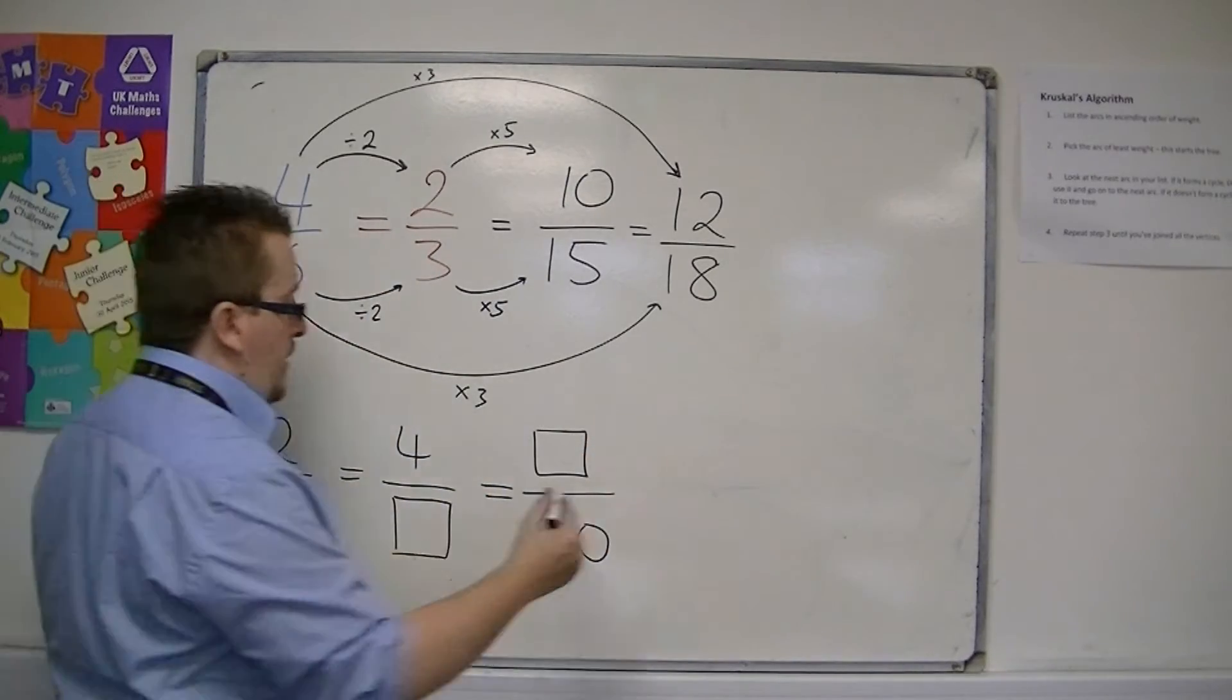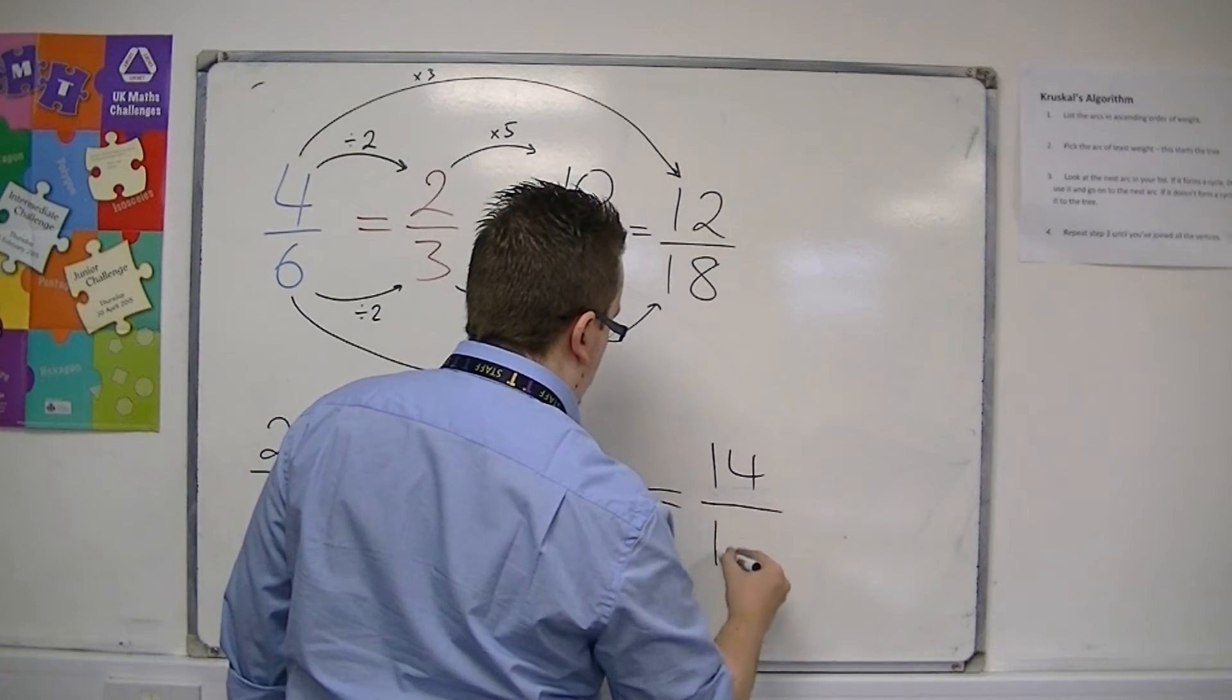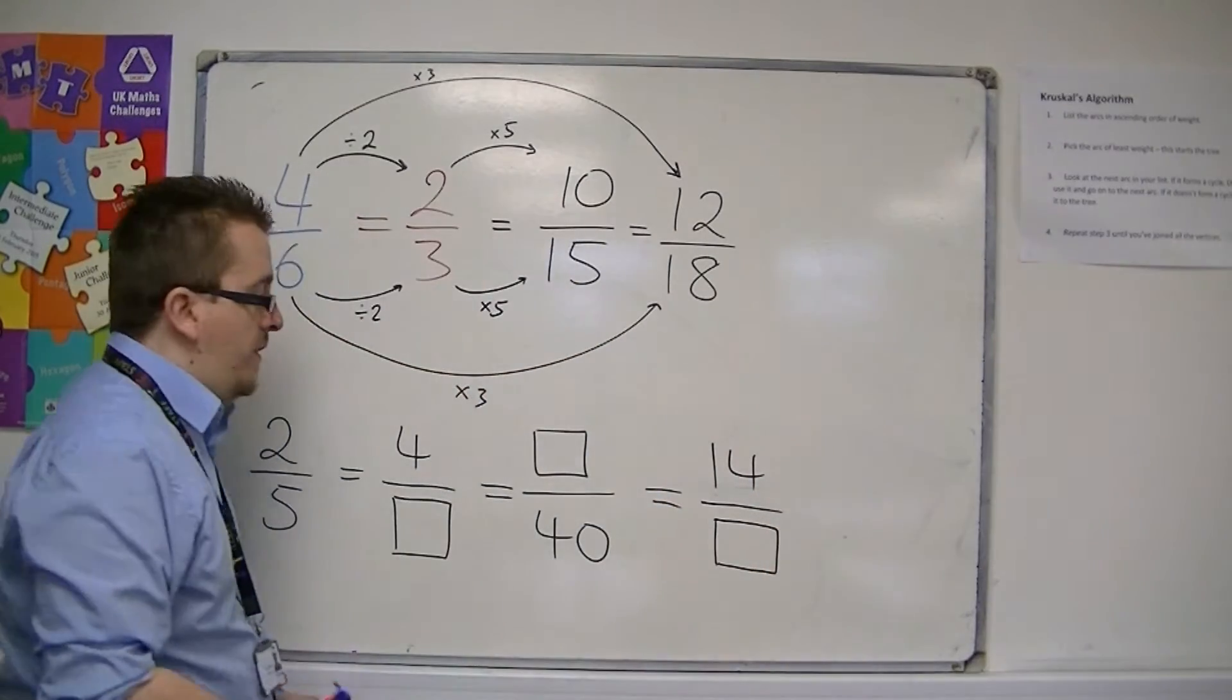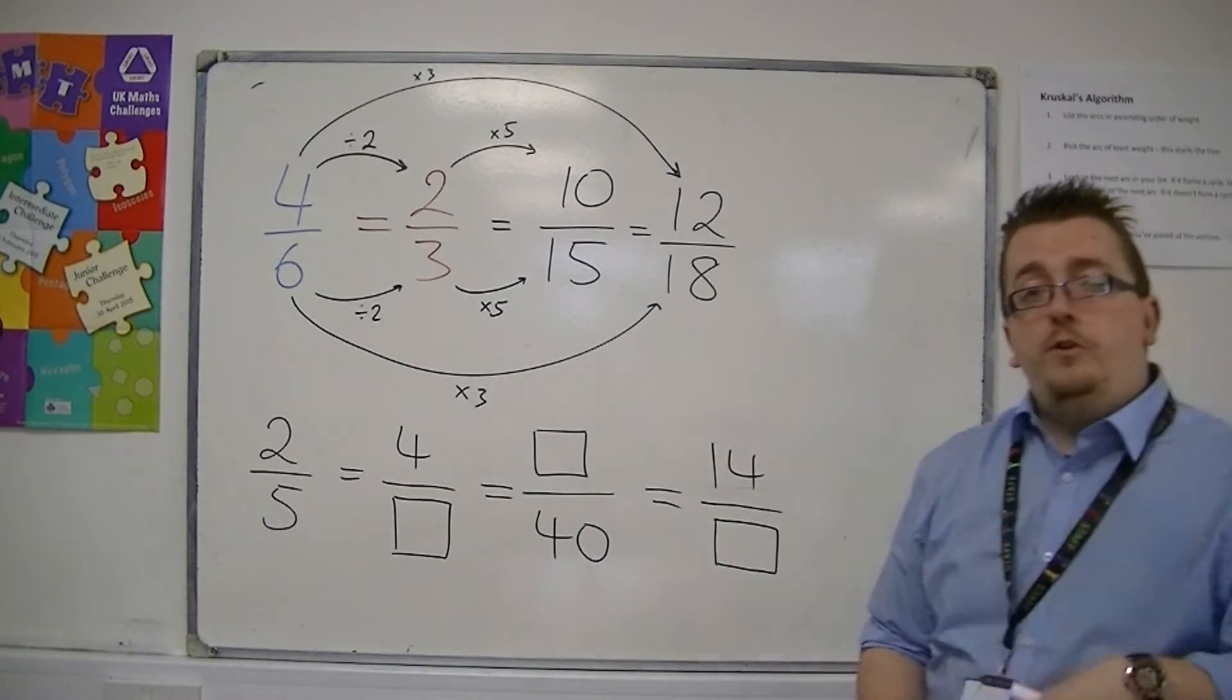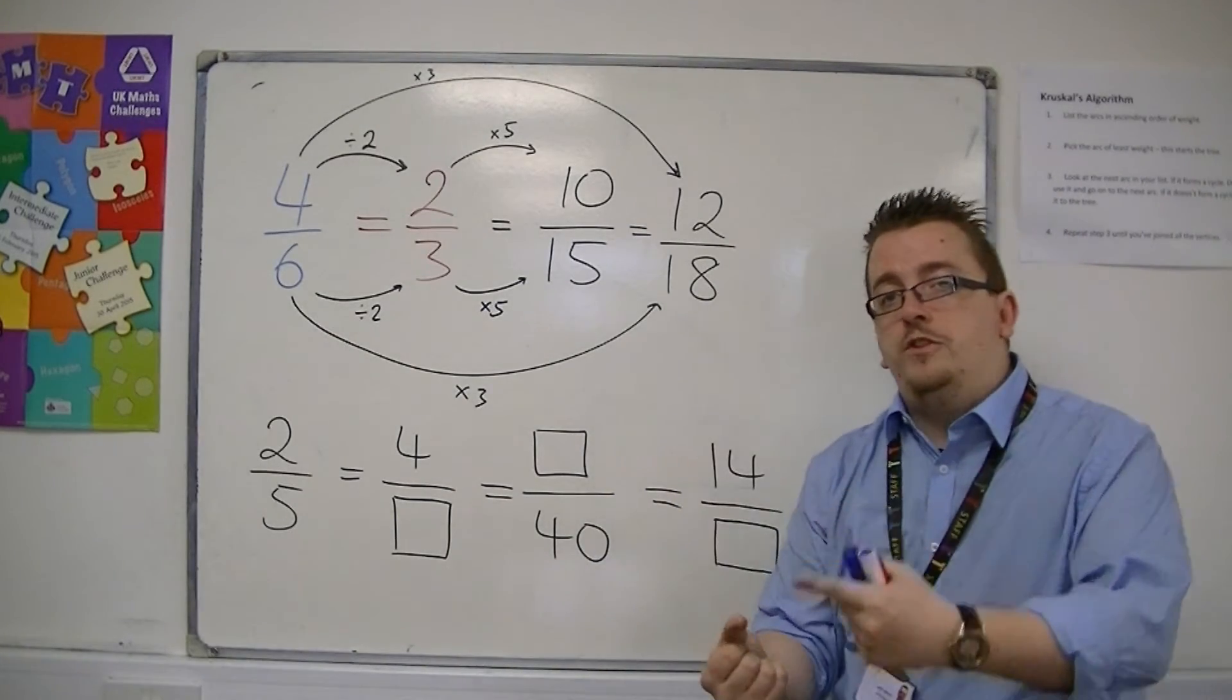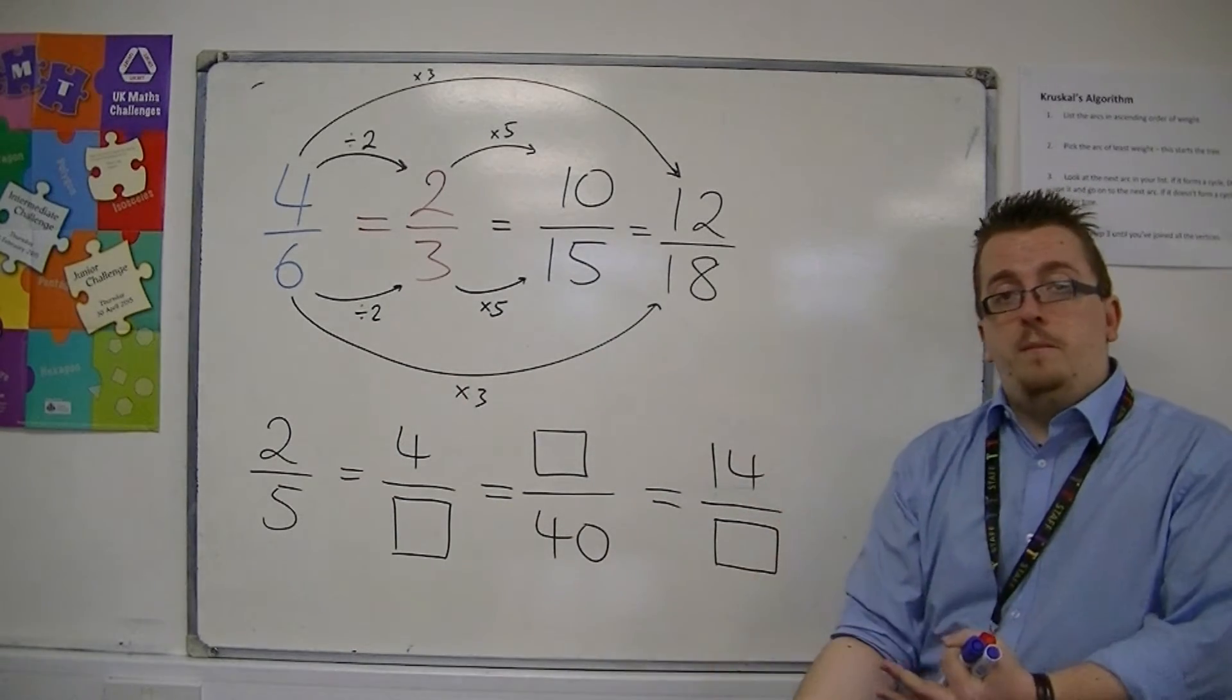You can imagine that this could be on an exam paper. You've got to use your understanding of equivalent fractions by multiplying and dividing the top and bottom number by the same.